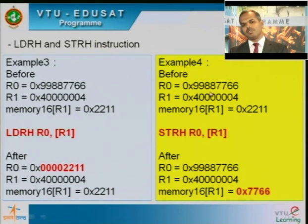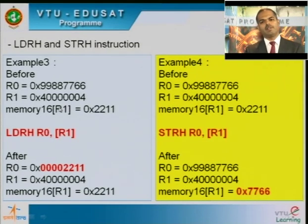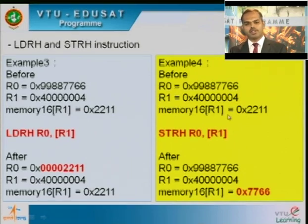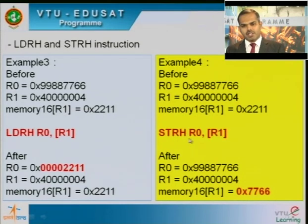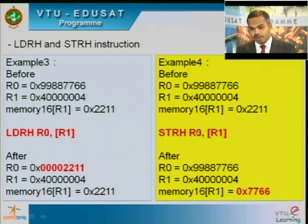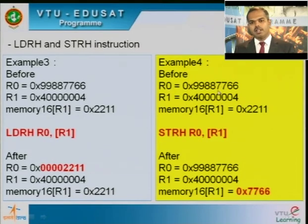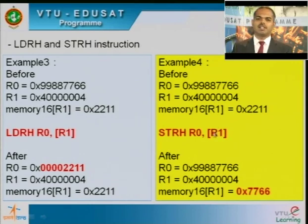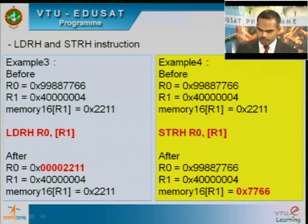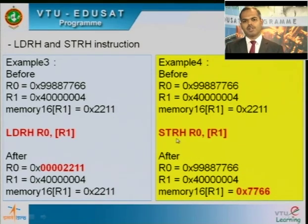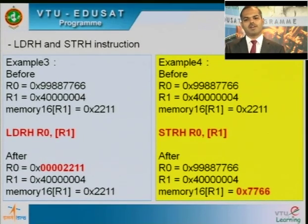Example 4 — STRH: Before execution, R0 = 0x99887766, R1 = 0x40000004, Memory16[R1] = 0x2211. Instruction: STRH R0, [R1]. After execution, the lower 16 bits of R0 — that is 0x7766 — are copied to the memory location pointed to by R1. Memory16[R1] becomes 0x7766. R0 and R1 are unaltered.